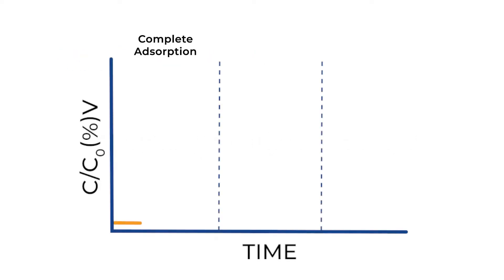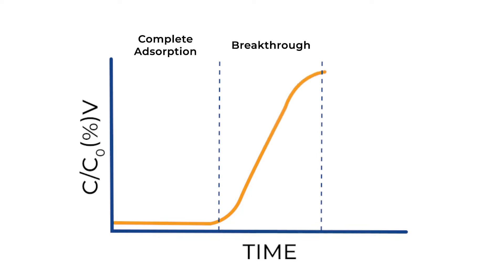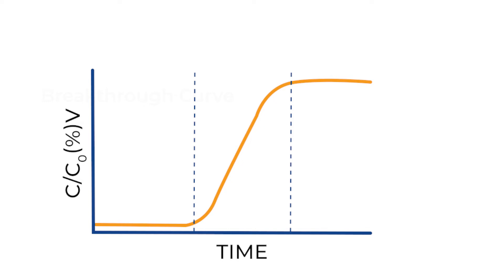Initially, the adsorbent would completely absorb the adsorbent gas entering the column. Eventually, breakthrough will occur when the concentration of the adsorbent gas is first detected. Lastly, saturation will be reached. Once all adsorbent species have reached saturation, the breakthrough experiment will reach equilibrium.